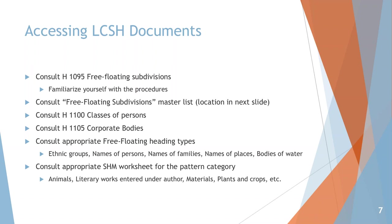You'll also want to look at H1100 and H1105 in the Subject Headings Manual. H1100 is for classes of persons, H1105 for corporate bodies. These provide lists of subdivisions applicable under classes of persons or under corporate bodies. They're not called pattern headings specifically, but they operate the same way. If you have a class-of-person term like 'students' or 'physicists,' you can pull up H1100, look at the list of subdivisions, and apply them to your main heading.